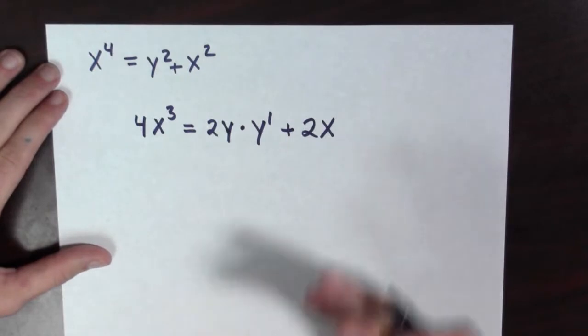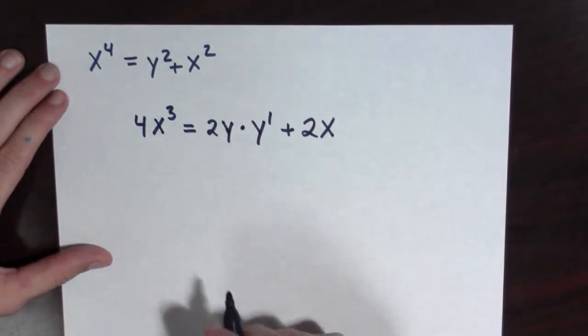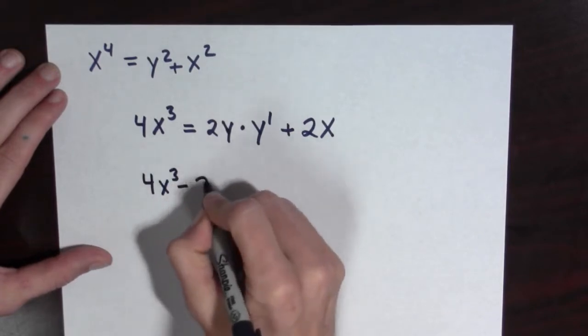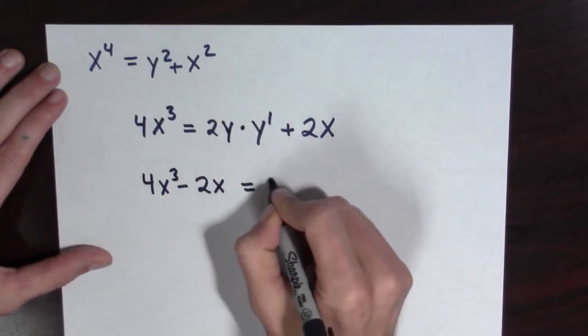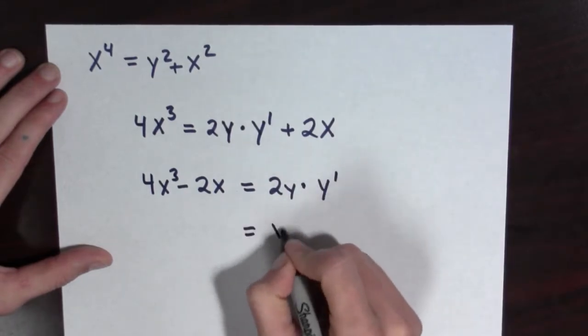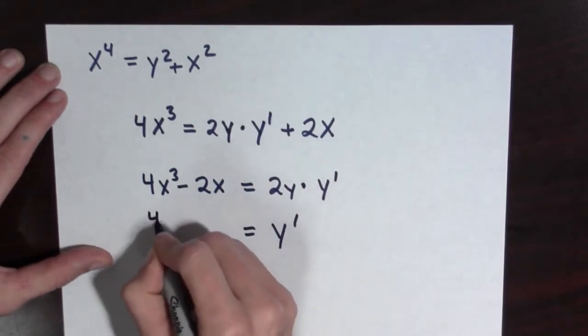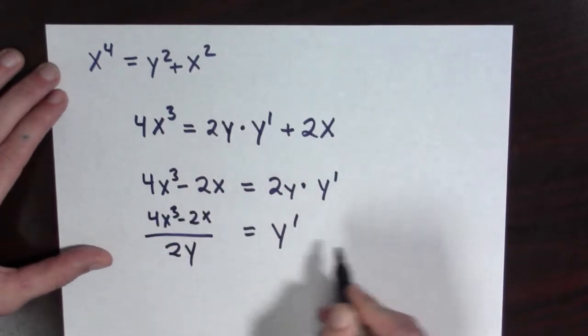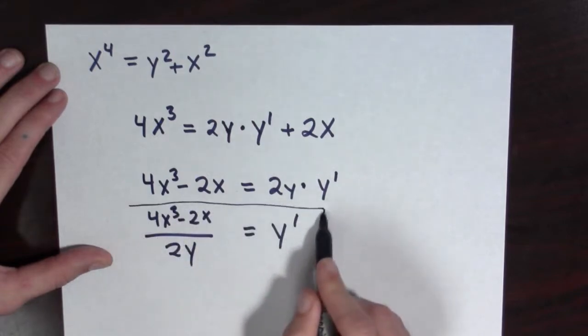And now we simply solve for y prime. So we're going to have 4x cubed minus 2x is equal to 2y times y prime. And finally we have 4x cubed minus 2x all over 2y is equal to y prime.